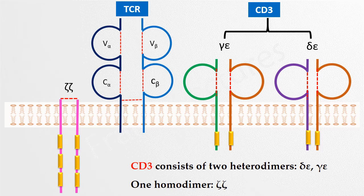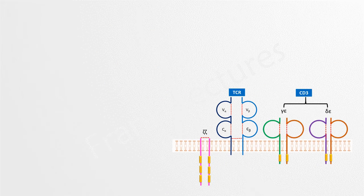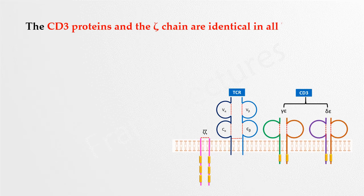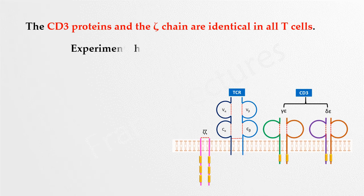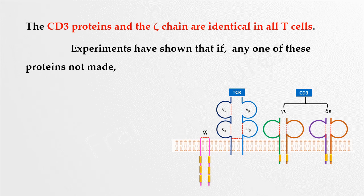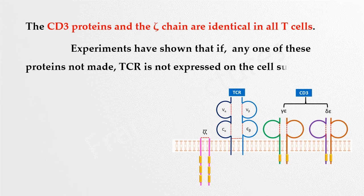Here you can see the whole TCR complex on the cell surface of a T-cell. The CD3 proteins and the zeta chain are identical in all T-cells. It is important to note that the whole complex — the alpha-beta T-cell receptor along with gamma, delta, epsilon, and zeta — is transported to the cell surface as a unit. Experiments have shown that if any one of these proteins is not made, the TCR is not expressed on the cell surface.